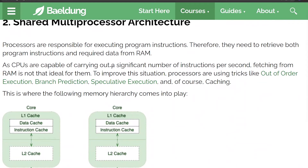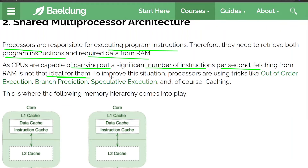Let's look at shared multiprocessor architecture. Processors are responsible for executing program instructions and they need to retrieve both program instructions and required data from RAM. As they are capable of carrying out a significant number of instructions per second, fetching from RAM is not ideal for them. To improve the situation, processors use tricks like out-of-order execution, branch prediction, speculative execution, and of course caching — these are all optimizations.